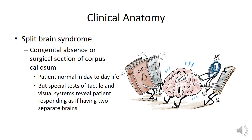In this condition, the patient is more or less normal in day-to-day life — at first look you cannot identify any abnormality. But spatial tests of tactile and visual systems reveal that the patient responds as if having two separate brains. In monkey experiments, if they are taught to do a task with one hand, they cannot repeat it with the other hand.